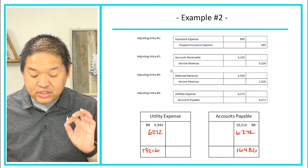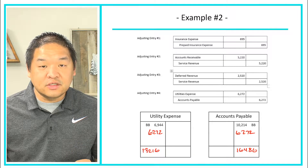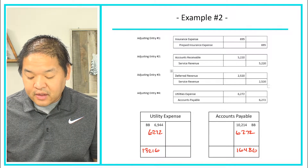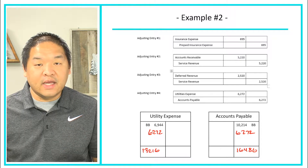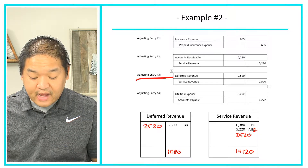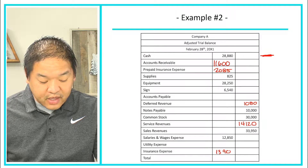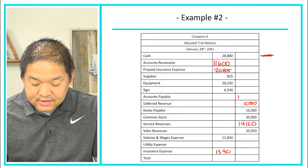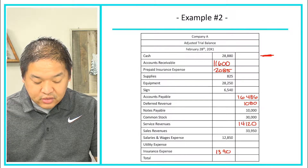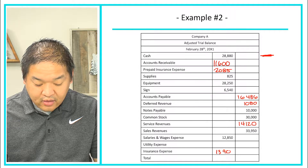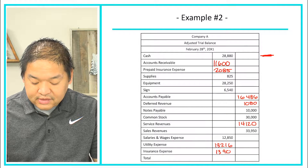Backing up to adjusting entry four: utilities expense went to $13,216 on the left-hand side, and accounts payable went up to $16,486 on the right-hand side. So to complete the adjusted trial balance, accounts payable final balance is $16,486 and utilities expense is now $13,216.